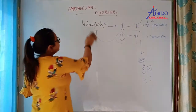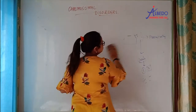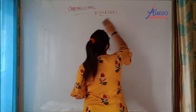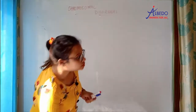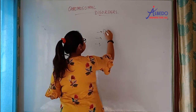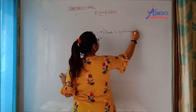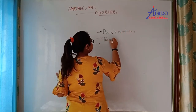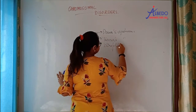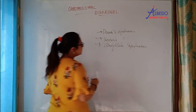There are three examples in your book. You have to read three disorders: Down syndrome, Turner syndrome, and Klinefelter syndrome.